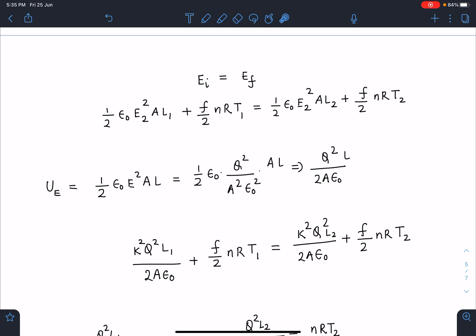So you can see here half epsilon not E square A L, actually when I substitute the value here Q squared by A squared epsilon not squared when I simplify this this becomes Q squared L by 2 epsilon not and this will get directly replaced. You can see here when I apply this between Stage 2 and Stage 3 the charge is KQ so K squared Q squared L1 by 2 epsilon not plus f by 2 NRT1 and this will become K squared Q squared L2 by 2 epsilon not plus f by 2 NRT2 which is internal energy.